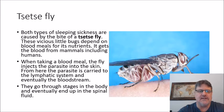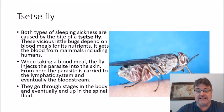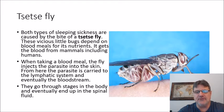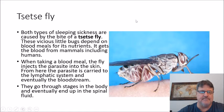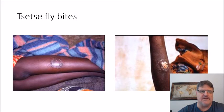These vicious little bugs depend on blood meals for nutrients, and they get blood from mammals, including humans. Many different animals in Africa can become infected with the parasite through the tsetse fly. When it takes a blood meal, the fly injects the parasite into the skin. From there, it is carried to the lymphatic system and eventually to the bloodstream. It goes through quite a few stages in the body and eventually ends up in the spinal fluid if left untreated. Here are photographs of tsetse fly bites — they're incredibly noticeable, and the fly is very aggressive, so it's kind of hard to miss.